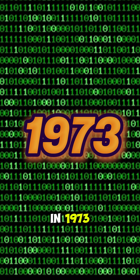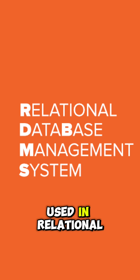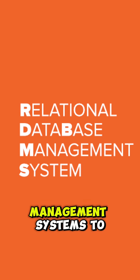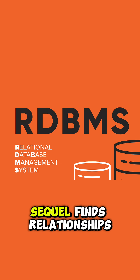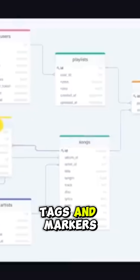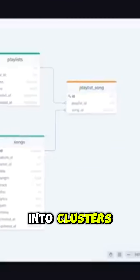It first appeared in 1973 and is commonly used in relational database management systems to this day. SQL finds relationships between points of data and uses identifying tags and markers to group data into clusters.